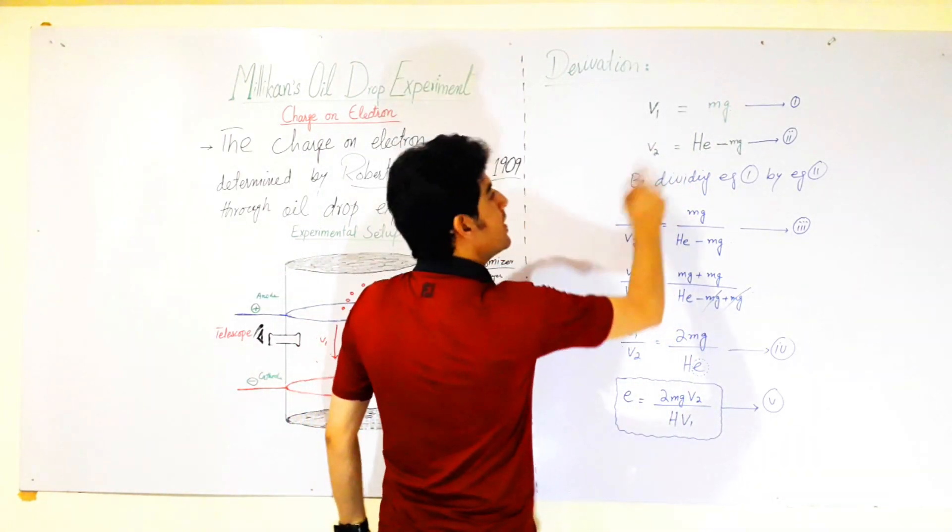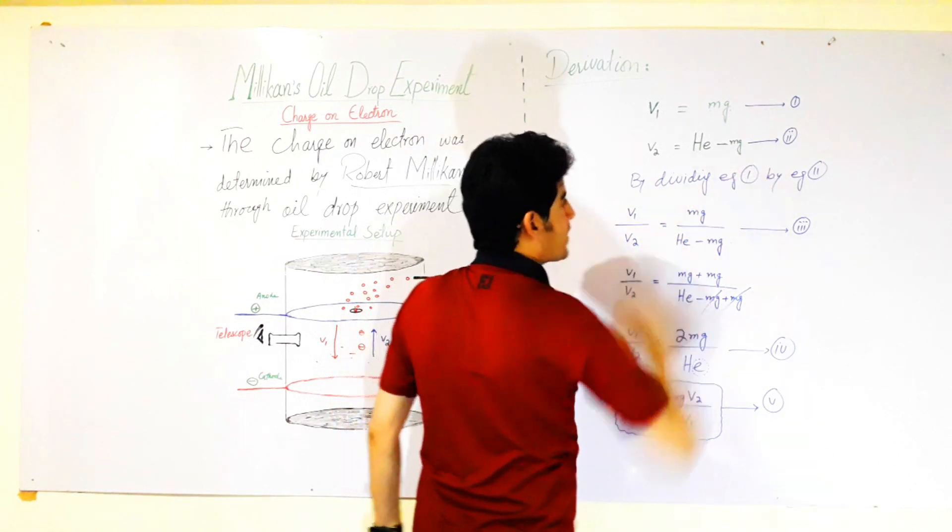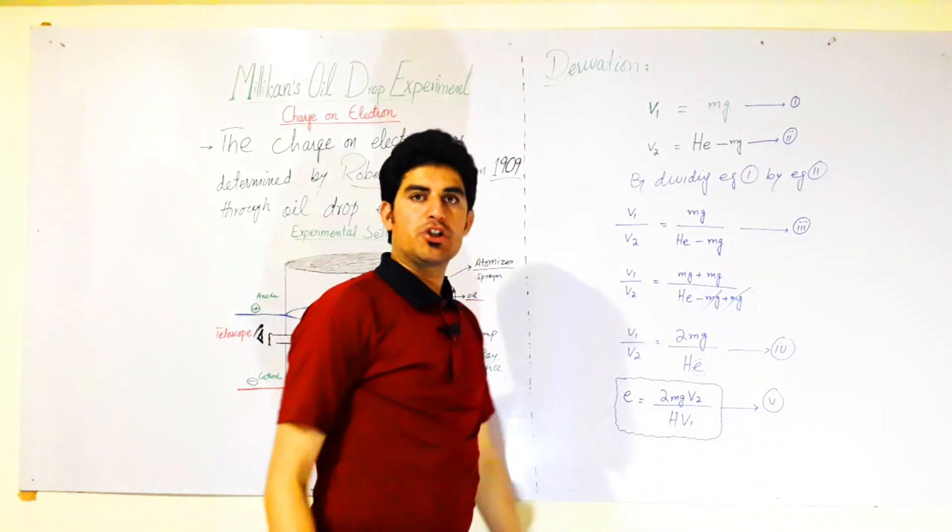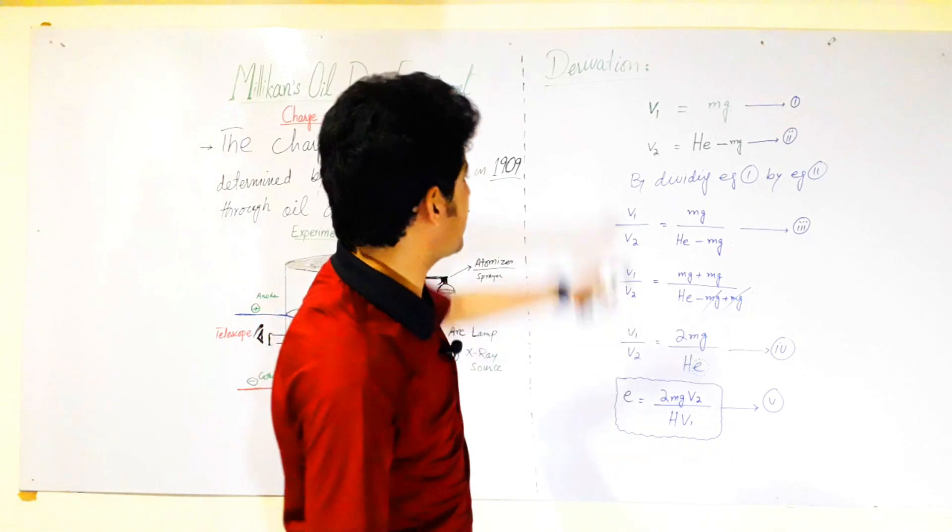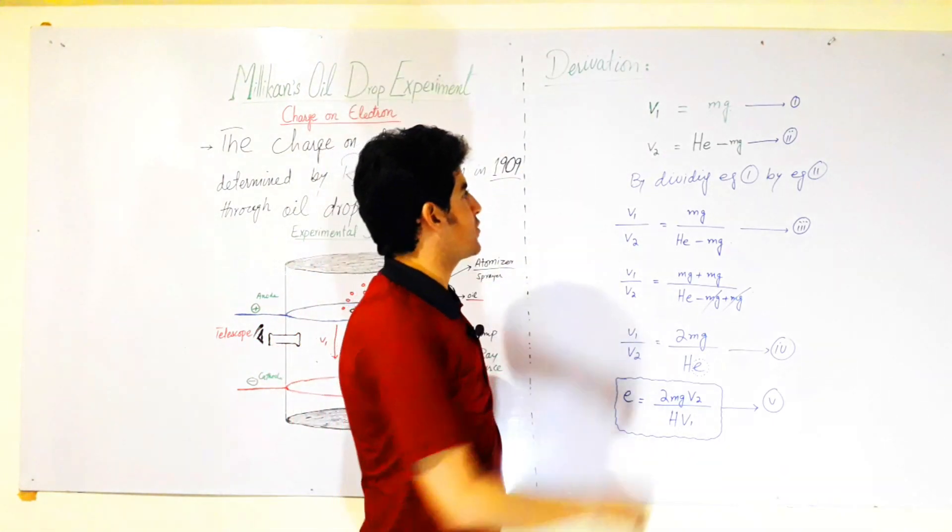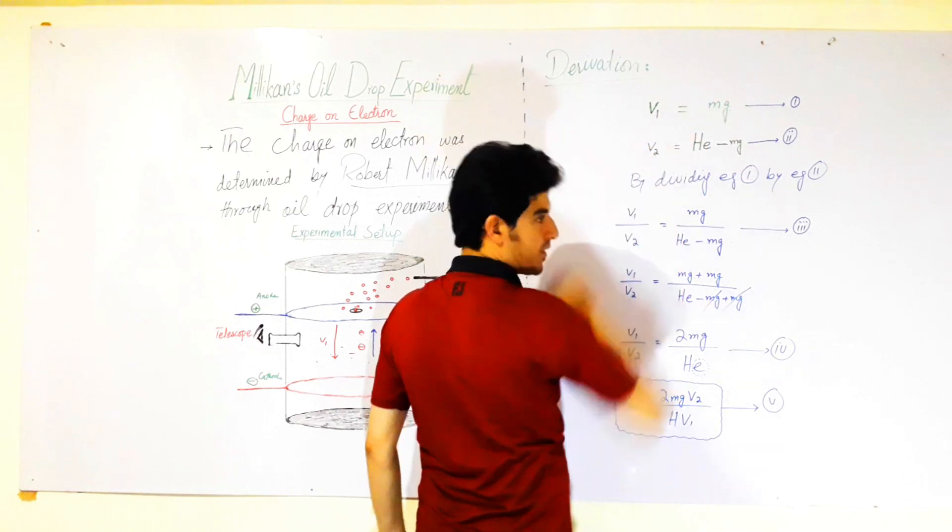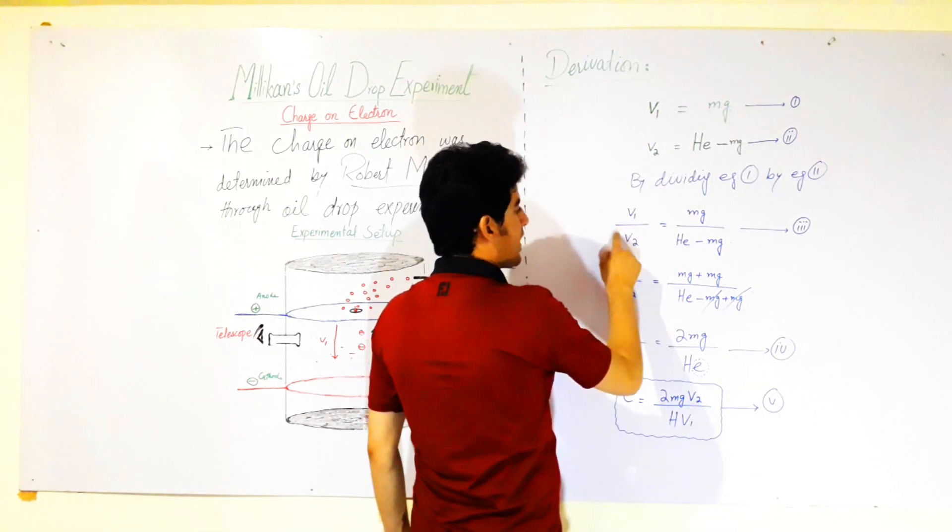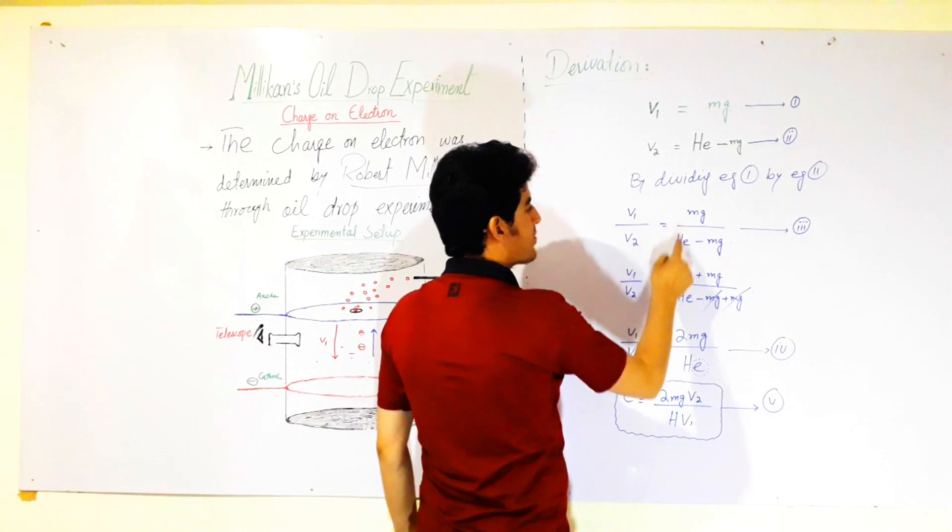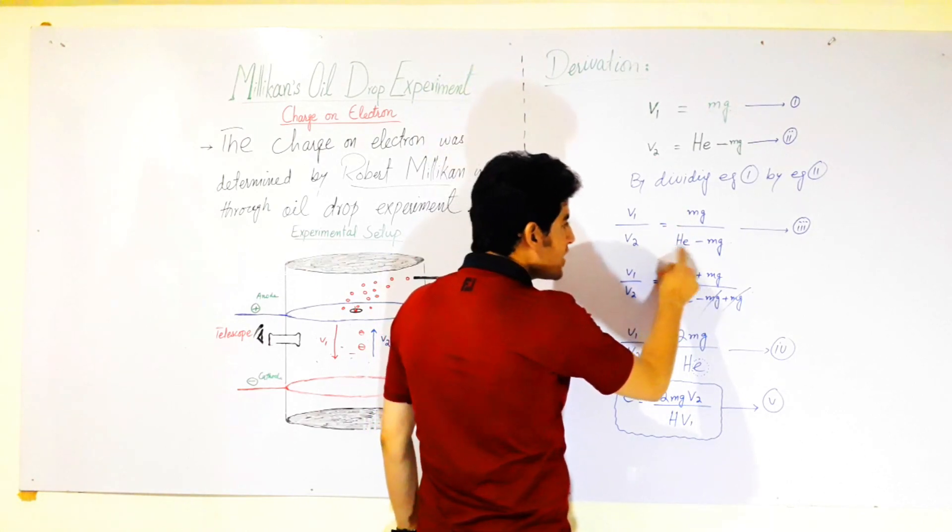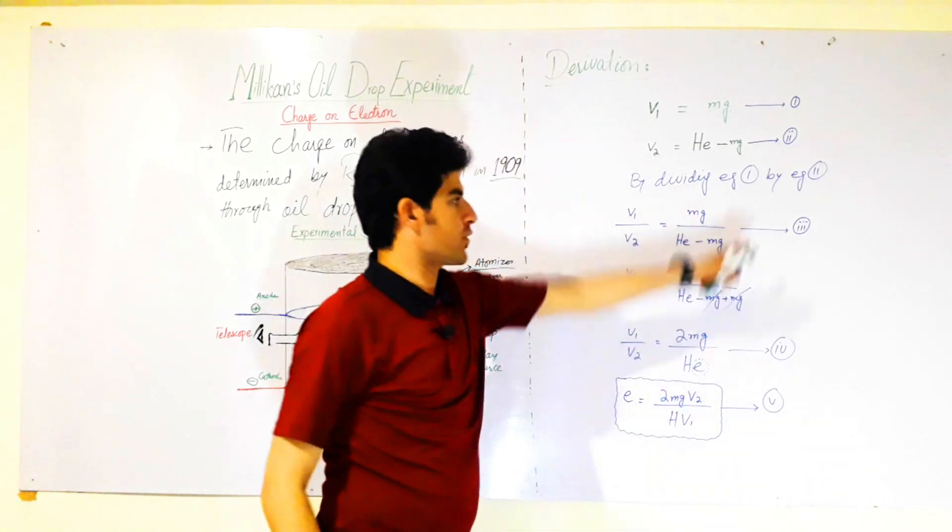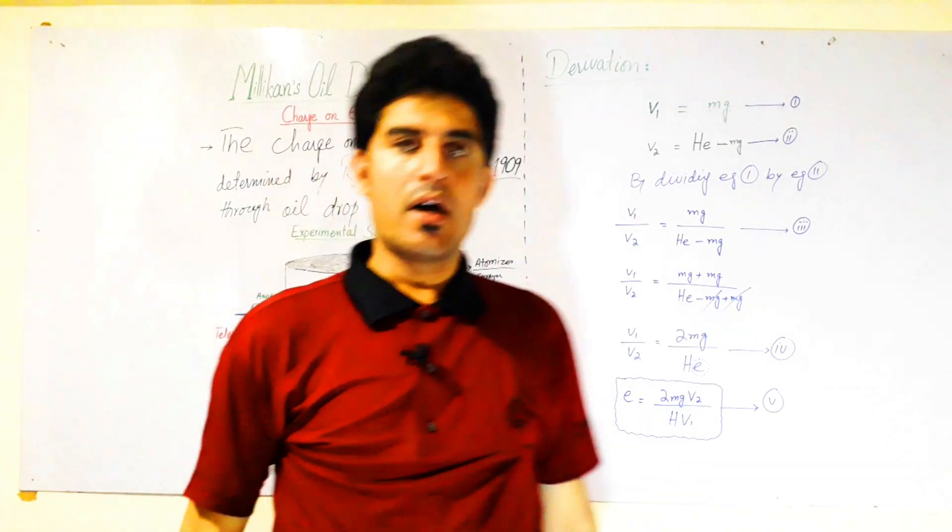Now, dividing equation number one by equation number two to find the charge. By dividing equation number one by equation number two, we get v1 divided by v2 is equal to mg divided by qE minus mg. This is equation number three.